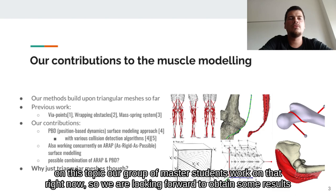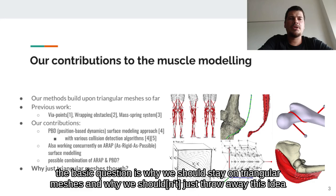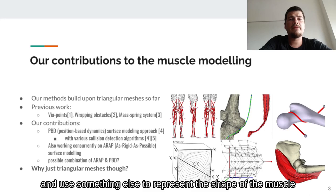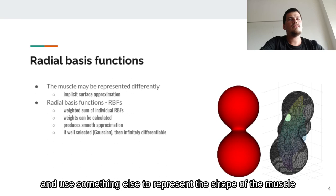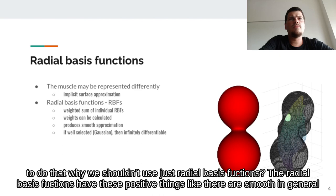The basic question is: why should we stay on triangular meshes, and why should we throw away this idea and use something else to represent the shape of the muscle? To do that — why shouldn't we just use radial basis functions?